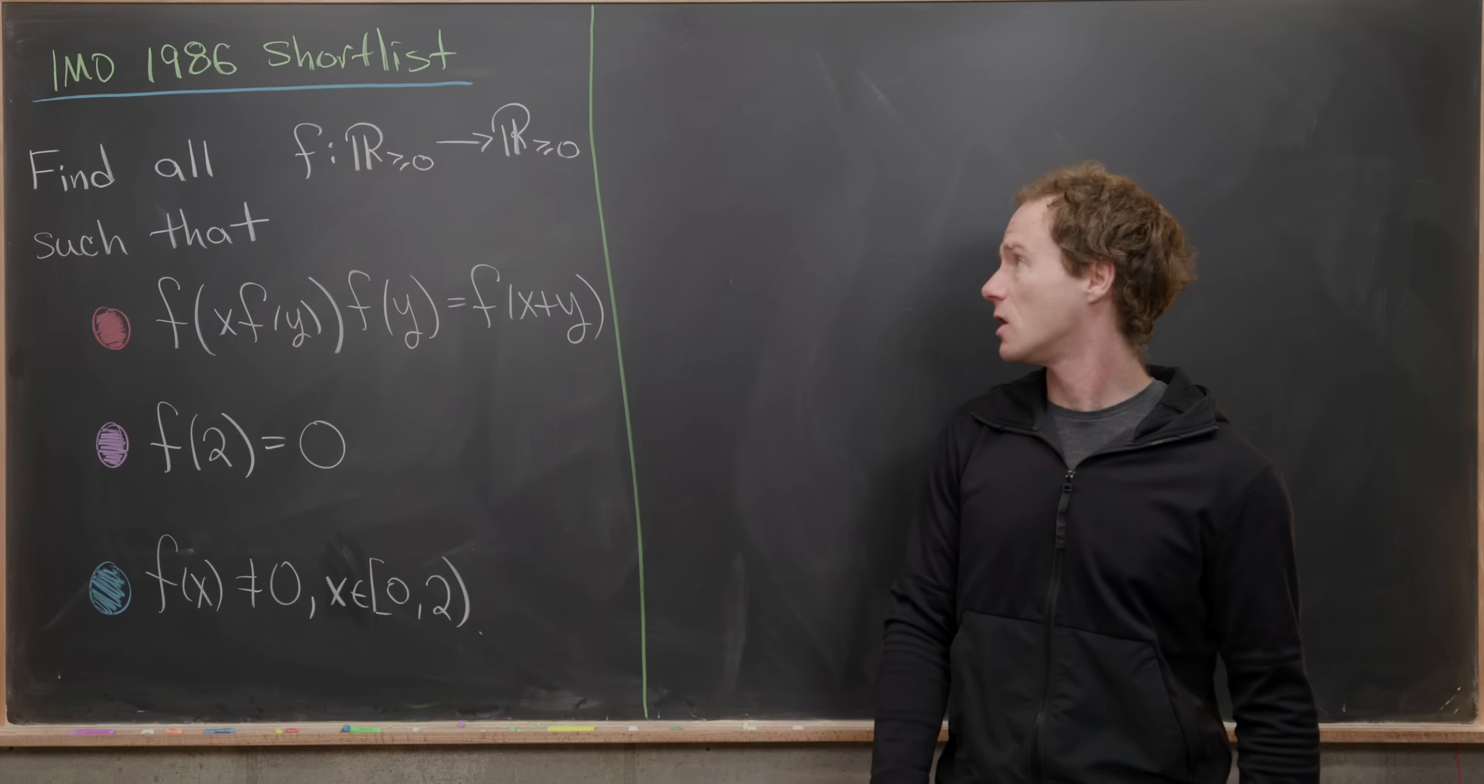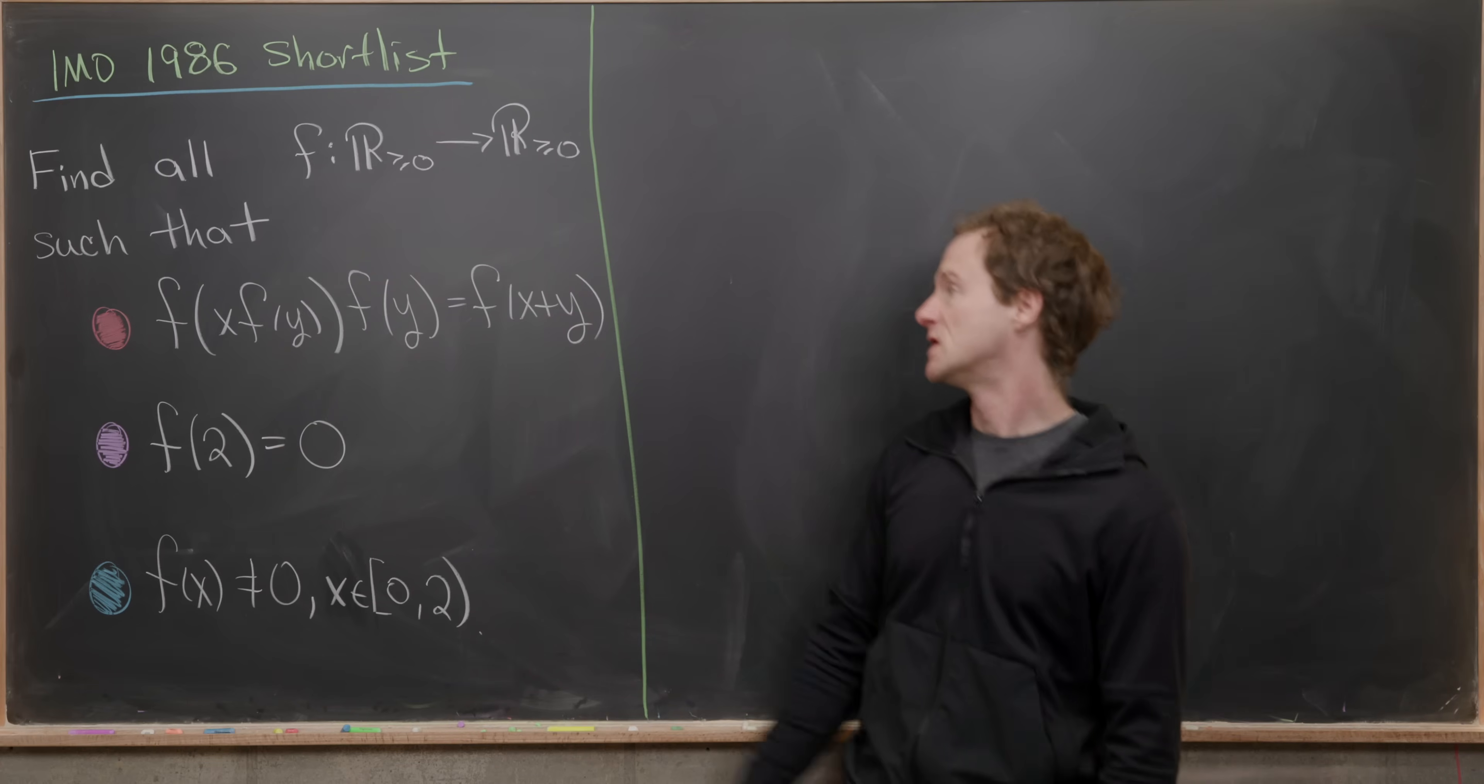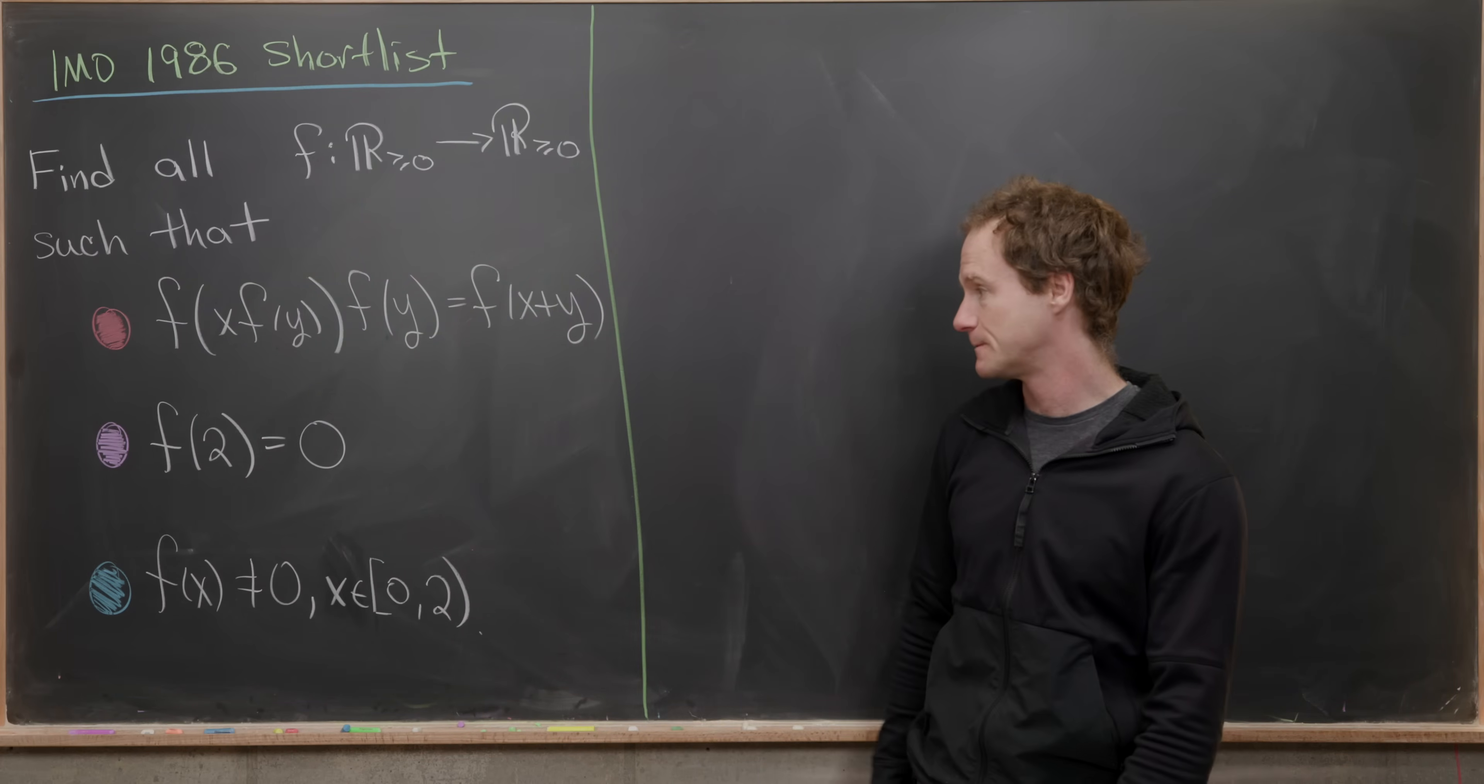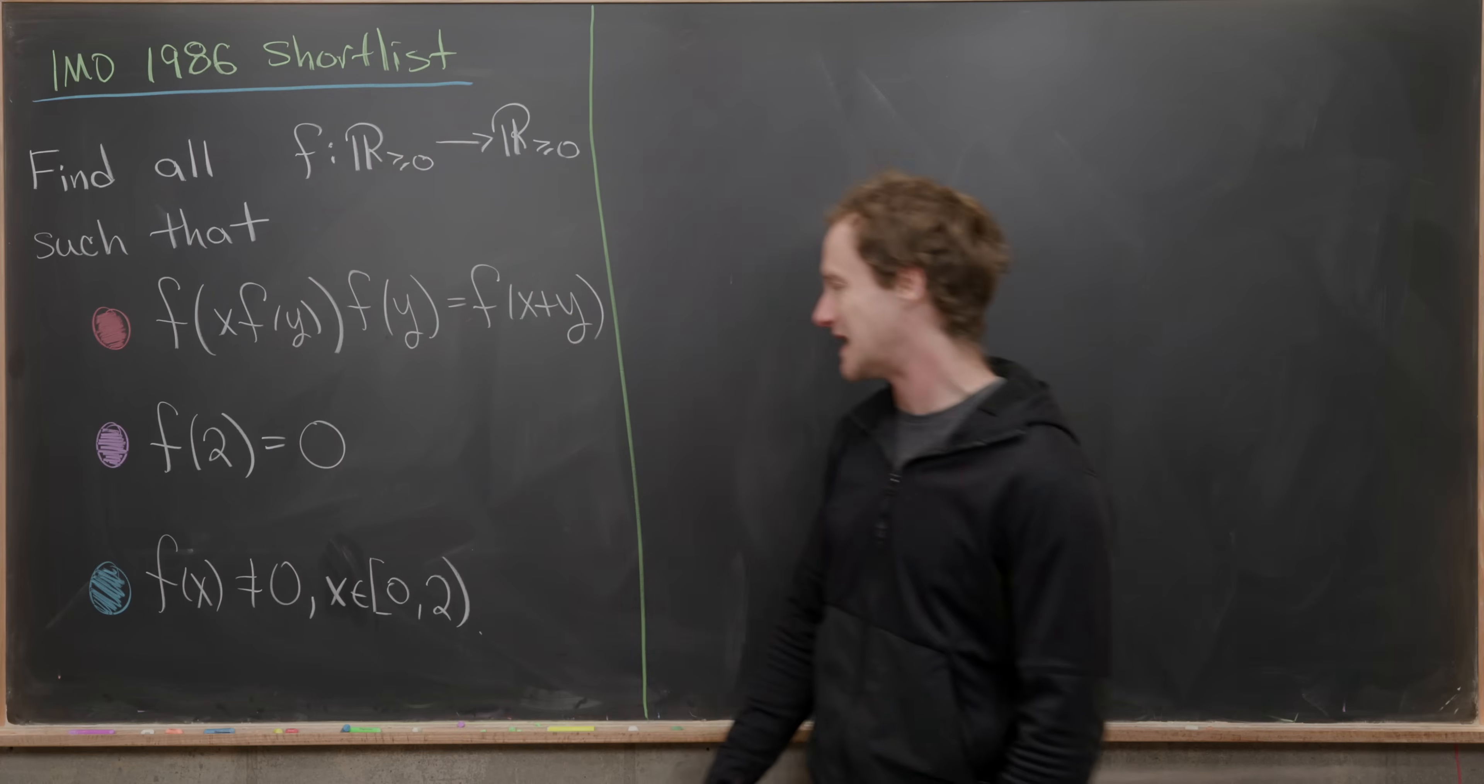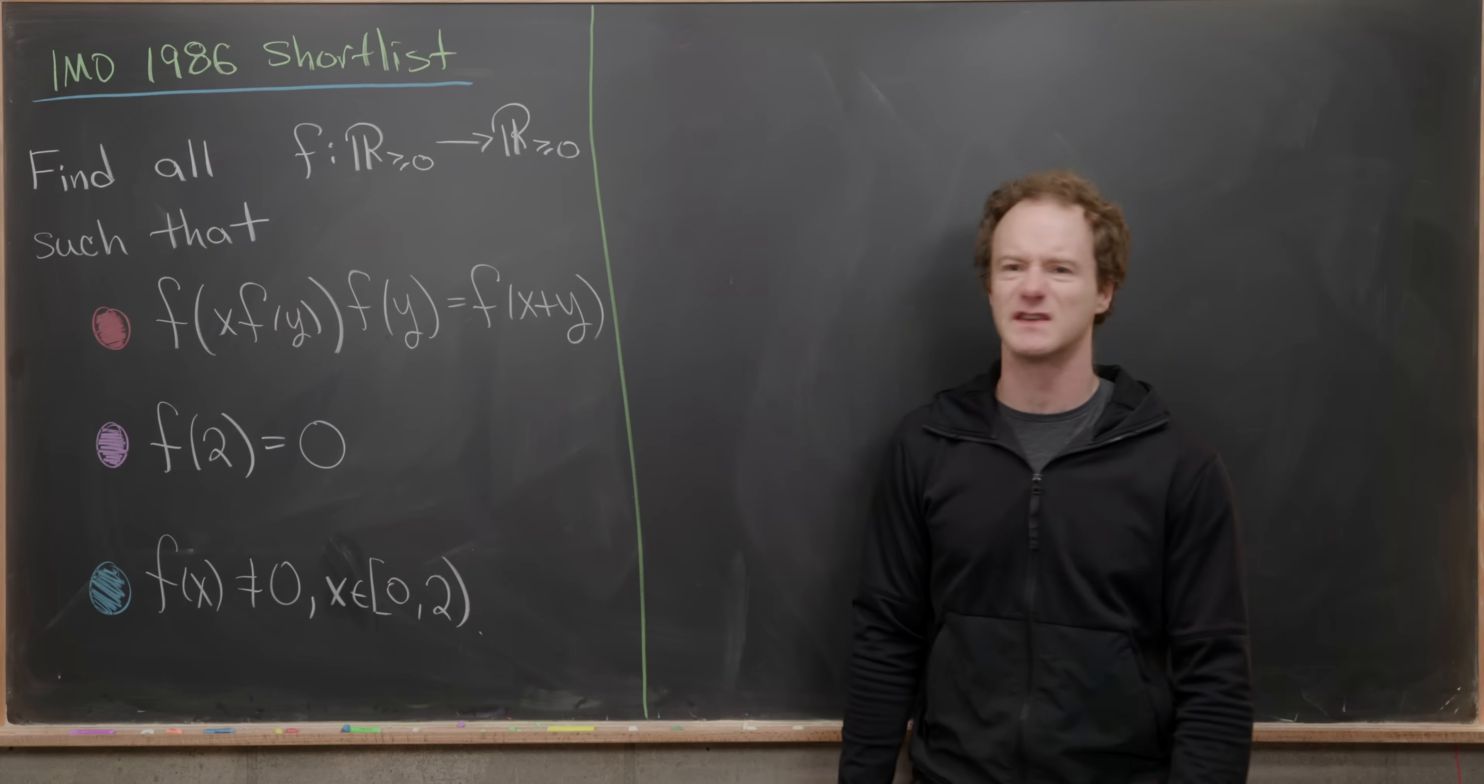We want to find all functions from non-negative real numbers to non-negative real numbers such that these three conditions are satisfied. We've got f(x)·f(y)·f(y) = f(x+y). Next we know f(2) = 0. And we know f(x) ≠ 0 if x is between 0 and 2, including 0 but not including 2. Obviously you cannot include 2 by this previous condition.